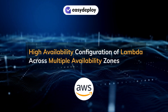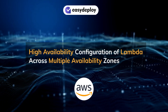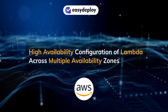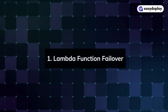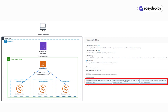High availability configuration of Lambda across multiple availability zones — Lambda function failover. Deploying Lambda functions across multiple AZs ensures high availability and fault tolerance. If one AZ experiences an outage or disruption, the Lambda function can automatically failover to another AZ.